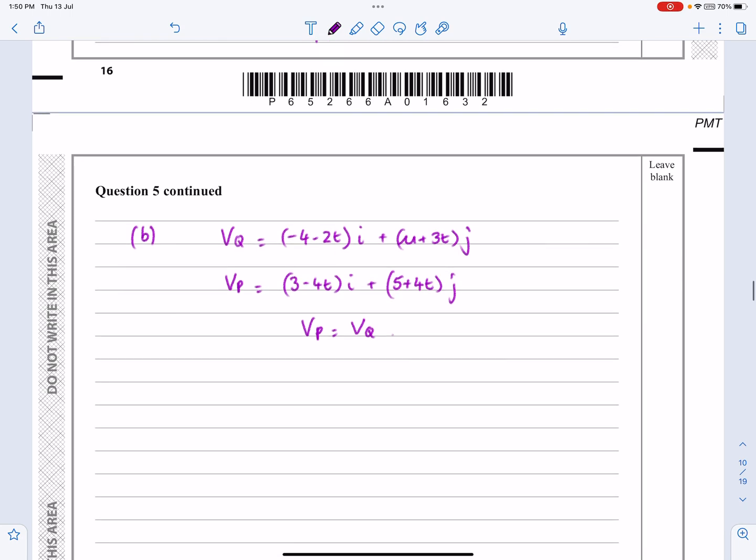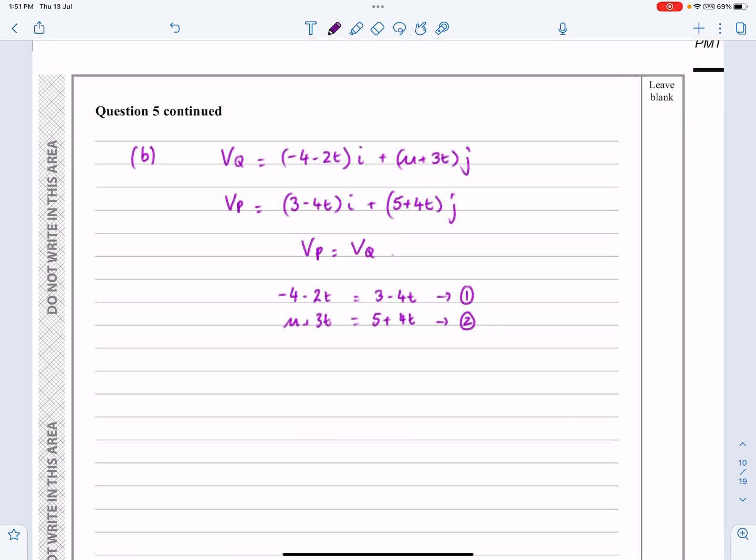And then the velocity that we have I'm going to call it VP just so that it looks in a similar notation. VP we had as 3 minus 4T I plus 5 plus 4T J. And there is going to be an instant when these two are the same as each other, when VP is going to equal VQ. So if we do have that situation then this one is equal to this one and also this one is going to be equal to that one. So I can set up two equations with the two pink things being equal to each other and then the two blue things being equal to each other.